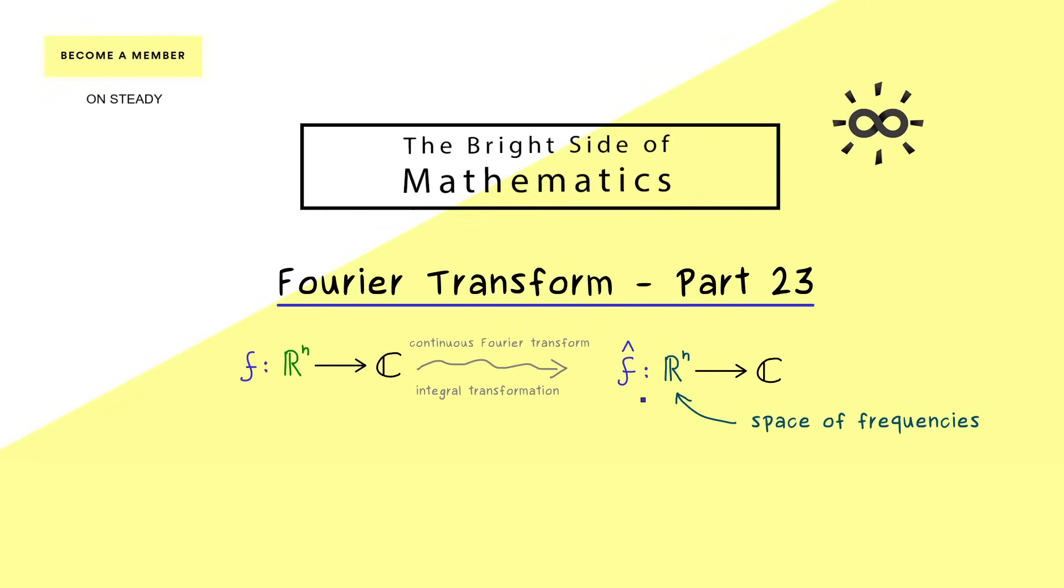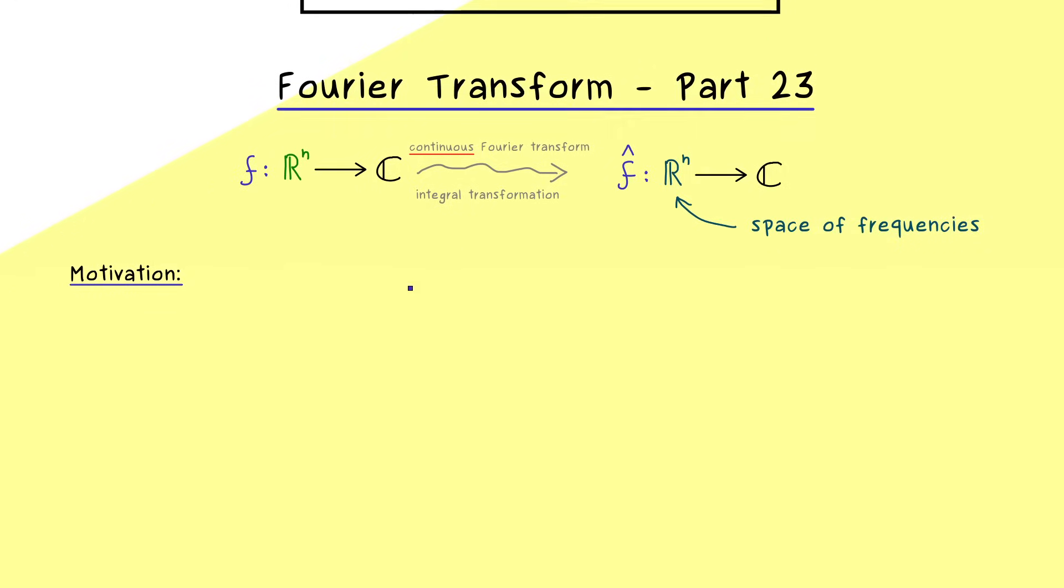So we are not in a countable set like the integers, here we also have a function defined on R^n. Therefore to distinguish it to what we have done before, we can call it the continuous Fourier transform. But the overall idea still stays the same, we want to describe the original function by using cosine and sine functions. And the obvious difference here is that the original function does not have to be a 2π periodic function anymore.